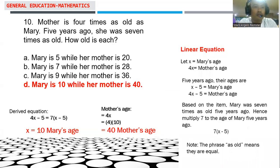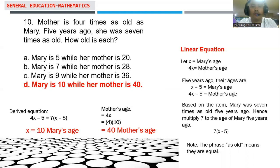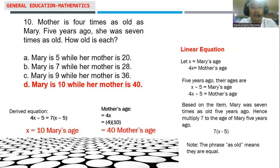For the last number, this is an application of a linear equation — specifically an age-related problem. The problem: Mother is 4 times as old as Mary. 5 years ago, she was 7 times as old. How old are they? The choices are: A. Mary is 5, mother is 20. B. Mary is 7, mother is 28. C. Mary is 9, mother is 36. D. Mary is 10, mother is 40.